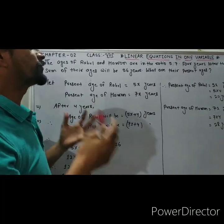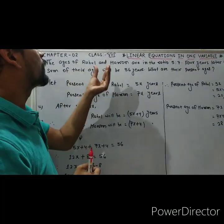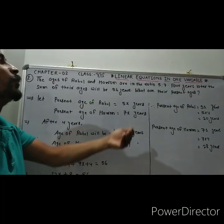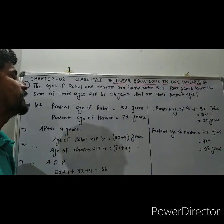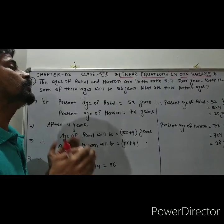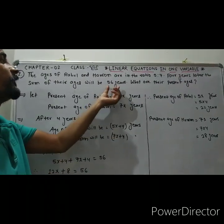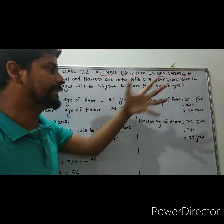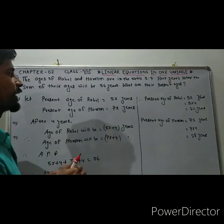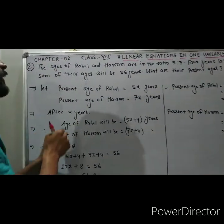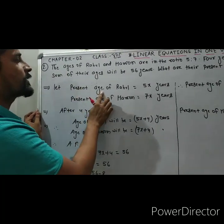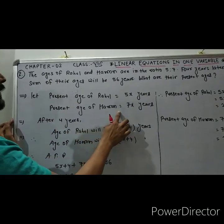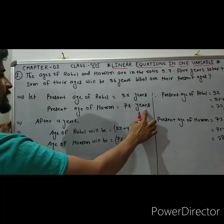The question is: Rahul and Haroon ka present age ka ratio is 5 is to 7. After 4 years, the sum of their ages will be 56 years. We have to find their present ages. So let us suppose: present age of Rahul is equal to 5x years, and present age of Haroon is equal to 7x years.